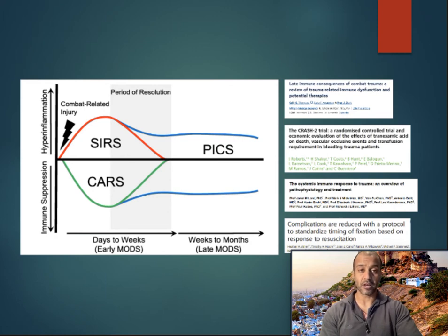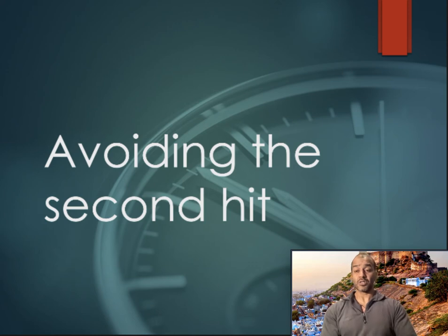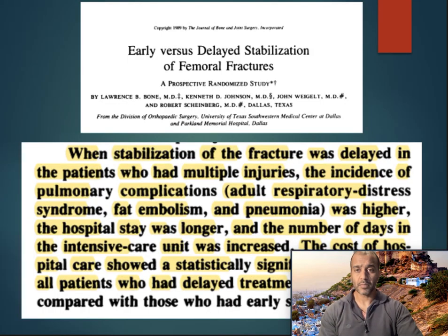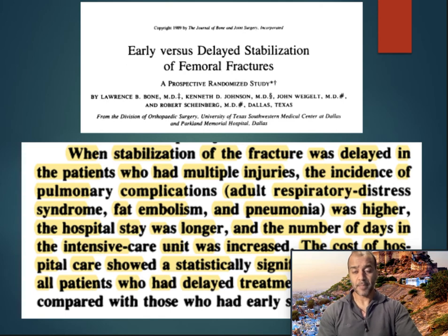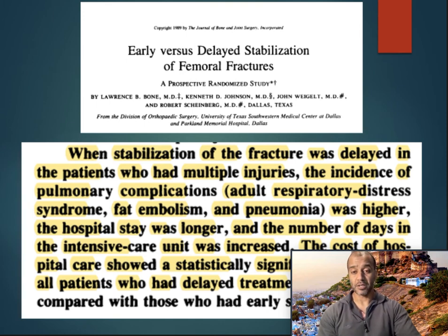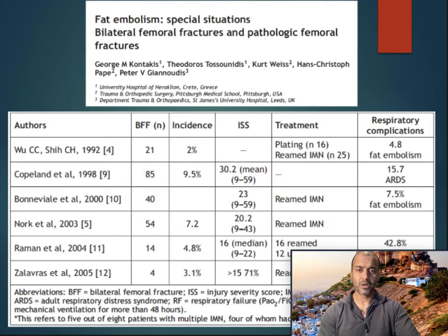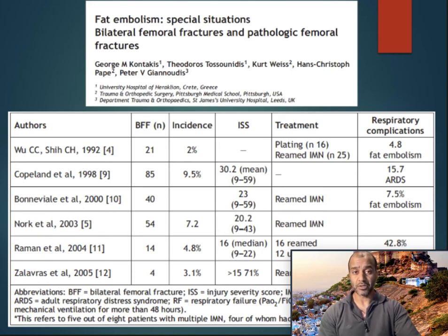Our goal as surgeons is to avoid the second hit. It's long been recognised — and this is a paper coming from 1989 by Bone et al — that when there was delayed surgery to isolated femoral shaft fracture, there was a worse outcome. There was a worse outcome also when associated with multiple injured patients, with fat emboli syndrome, higher rates of ARDS, higher rates of intensive care unit and hospital stay, and therefore a greater cost overall. When it comes to bilateral femur fractures, bilateral femoral nailing is associated with a high rate of lung injury from fat emboli syndrome, and that's been borne out in the literature multiple times.